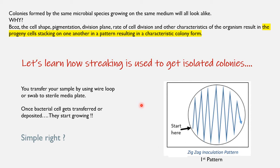Now let's learn how streaking is used to get isolated colonies. For example, suppose you get a swab sample from your dog — how will you proceed to get isolated colonies? This depends on how you transfer your sample using a wire loop or swab to a sterile media plate. The cell gets transferred or deposited and starts growing. The medium for carrying the bacterial cell is your wire loop or swab. For swab samples, a zigzag inoculation pattern is used.